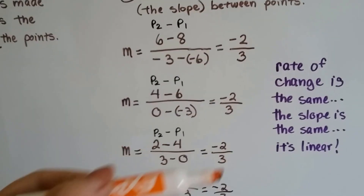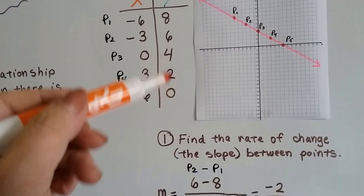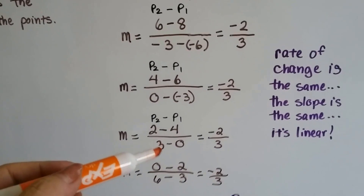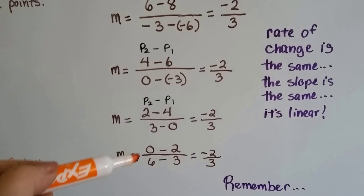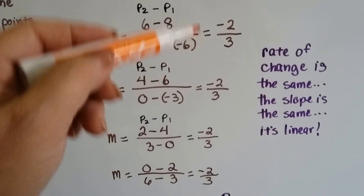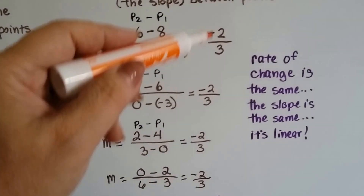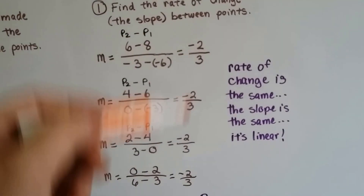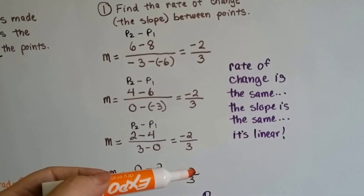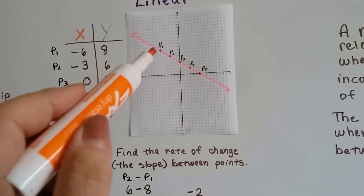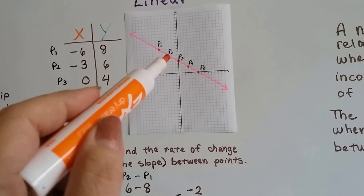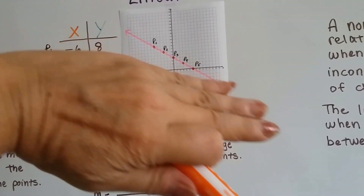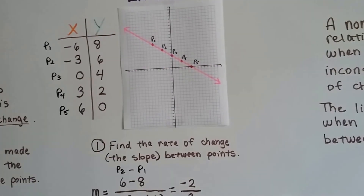We've got the same slope. And we do the last point: 0 take away 2 and 6 take away 3, and that's going to give us again a negative 2 over 3. So the rate of change is the same. The slope is the same, so this is linear. Each point, the slope is going down at the same rate, so we've got a nice smooth line.